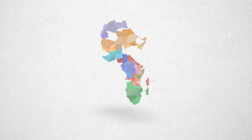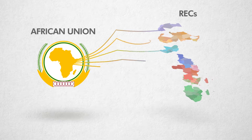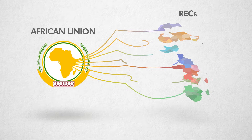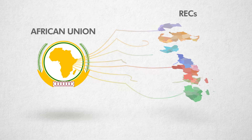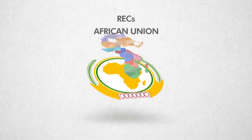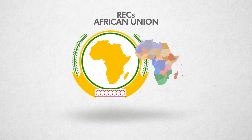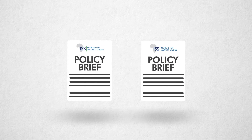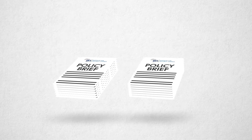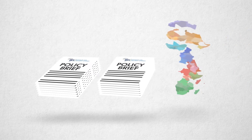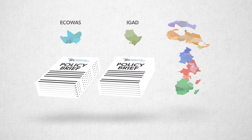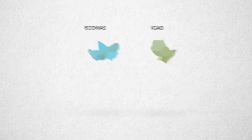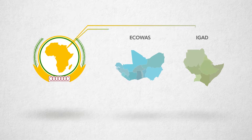A lack of communication and overlapping roles and structures between the AU and the RECs also means that resources are sometimes duplicated. Two new ISS policy briefs examine some of the best practices and lessons learned for two of these RECs, ECOWAS and IGAD. They also consider how these RECs can work better with the AU.